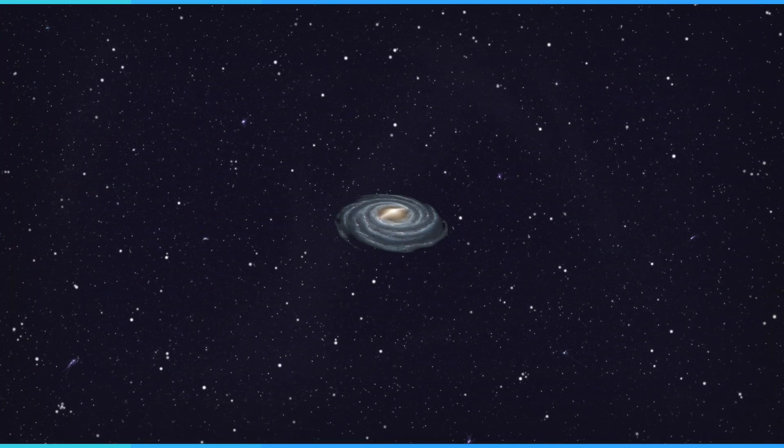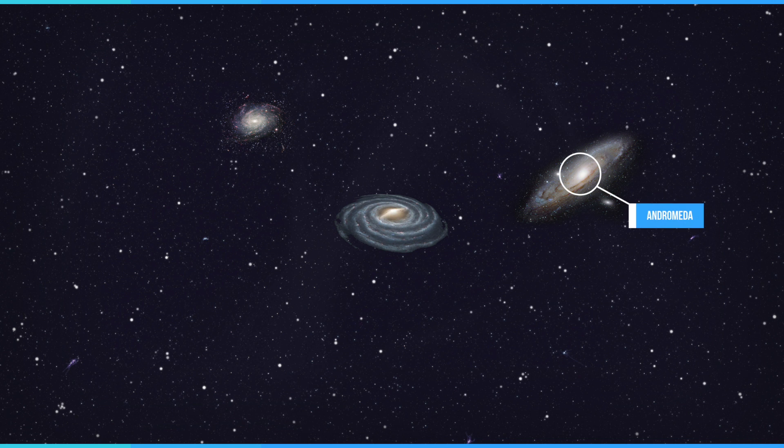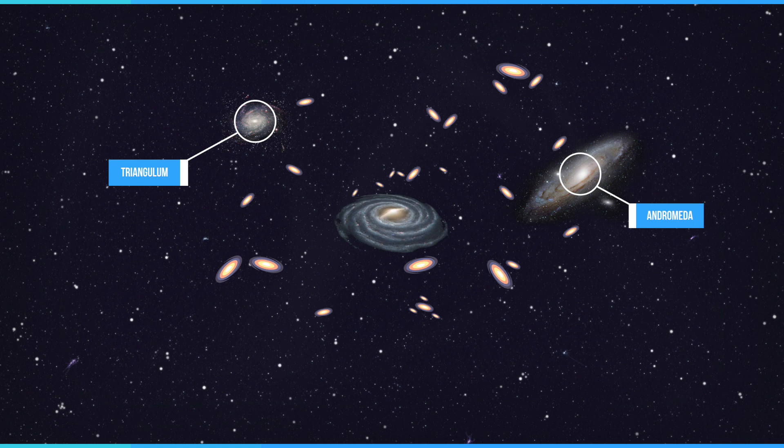The region around the Milky Way galaxy is rather crowded. Together with the Andromeda galaxy, our nearest neighbor, the Milky Way belongs to a group of 30 galaxies and dwarf galaxies called the Local Group.